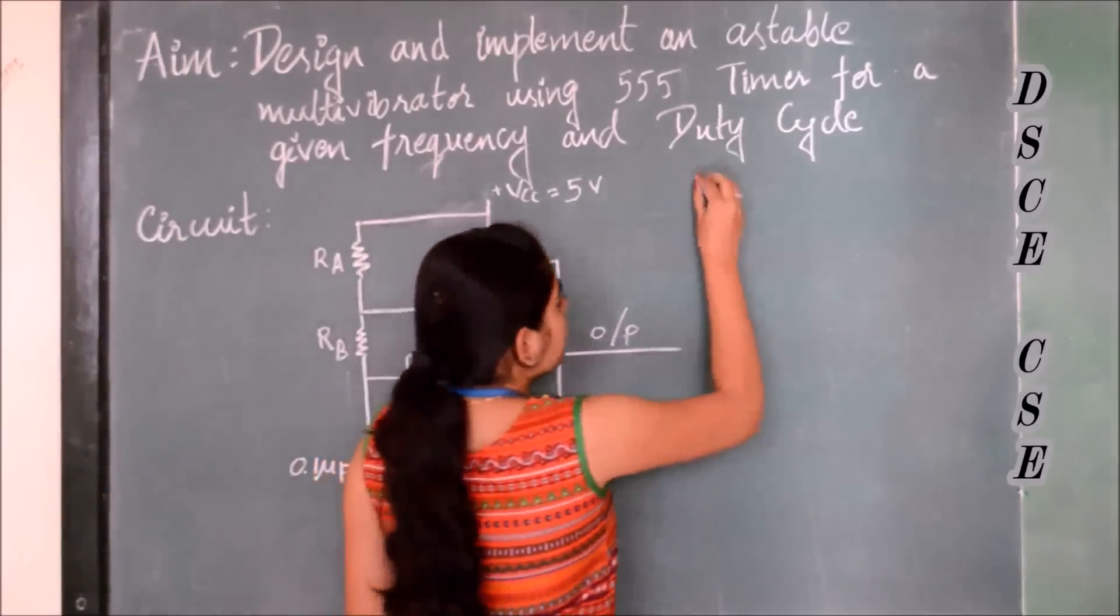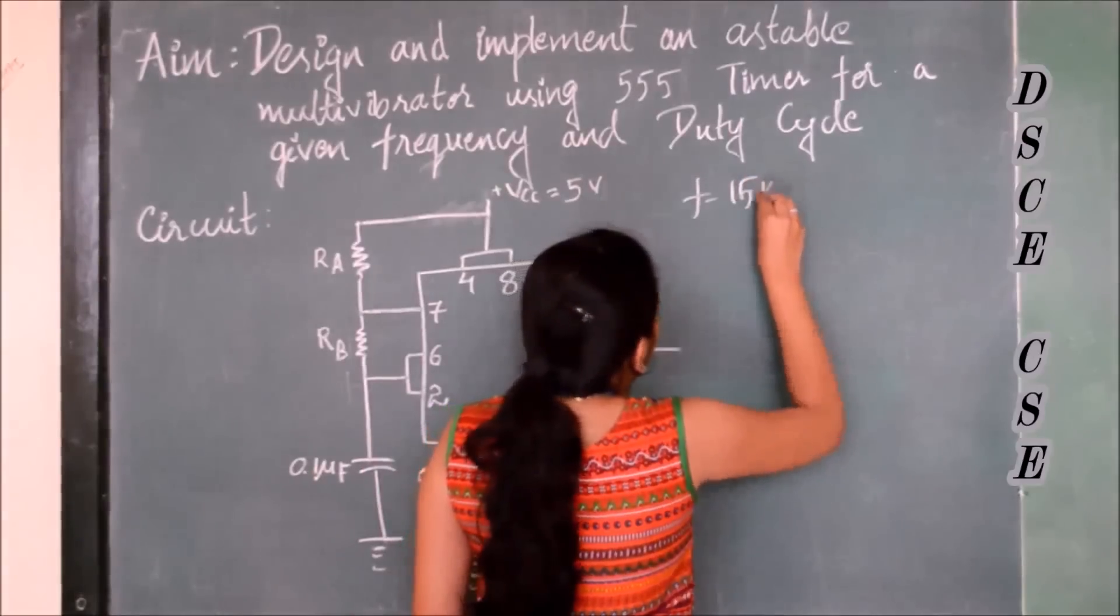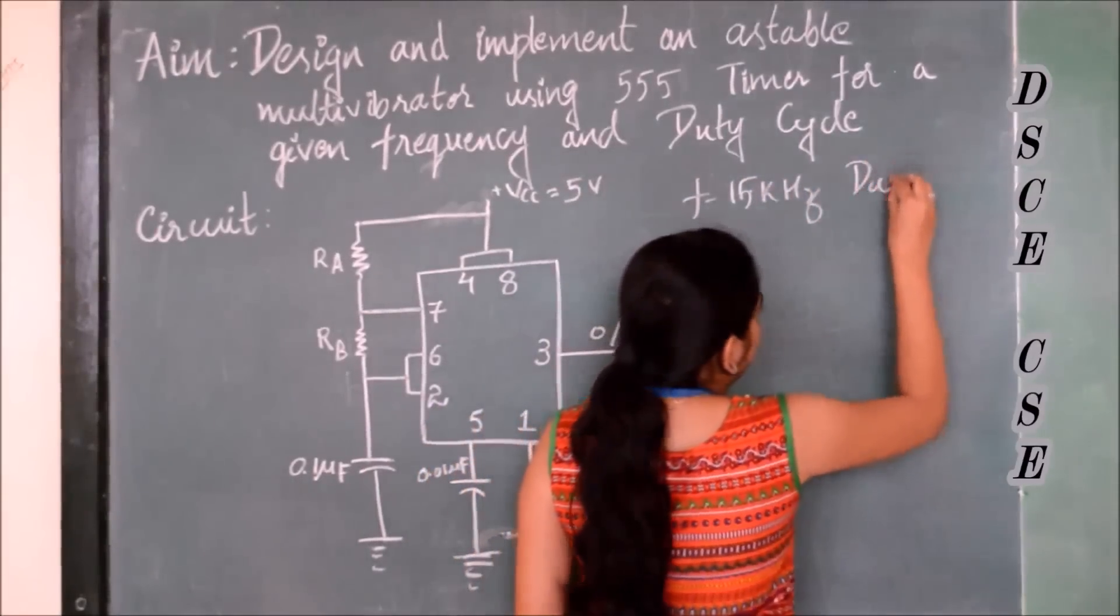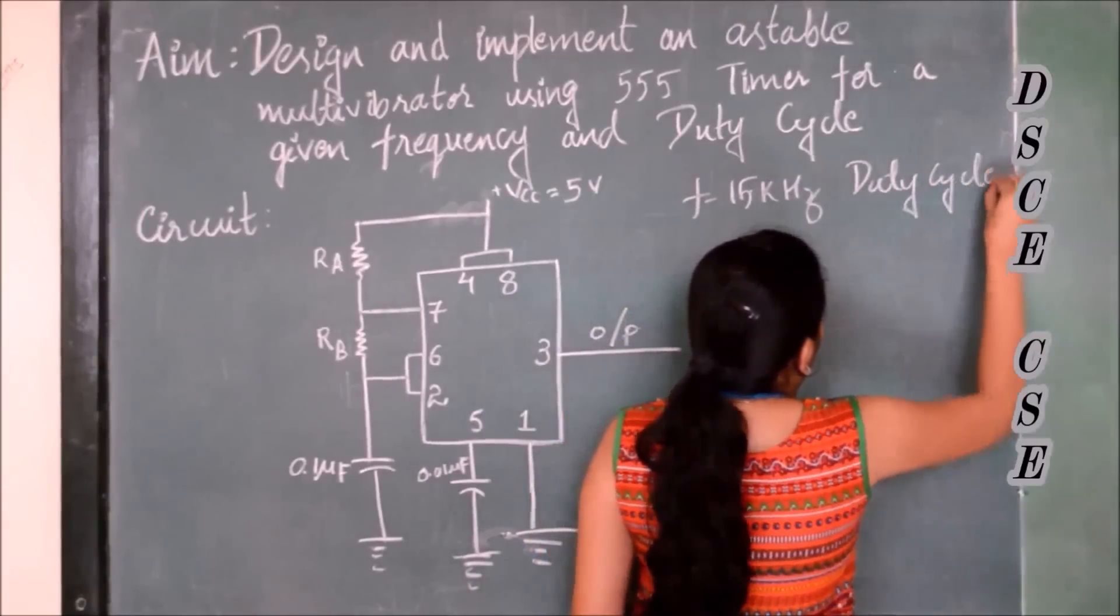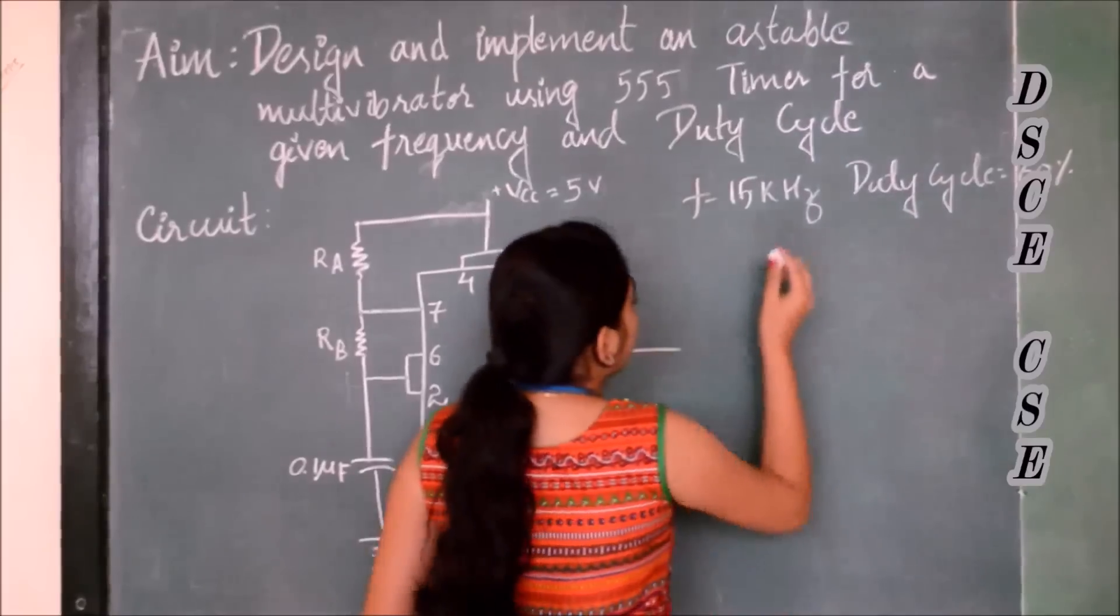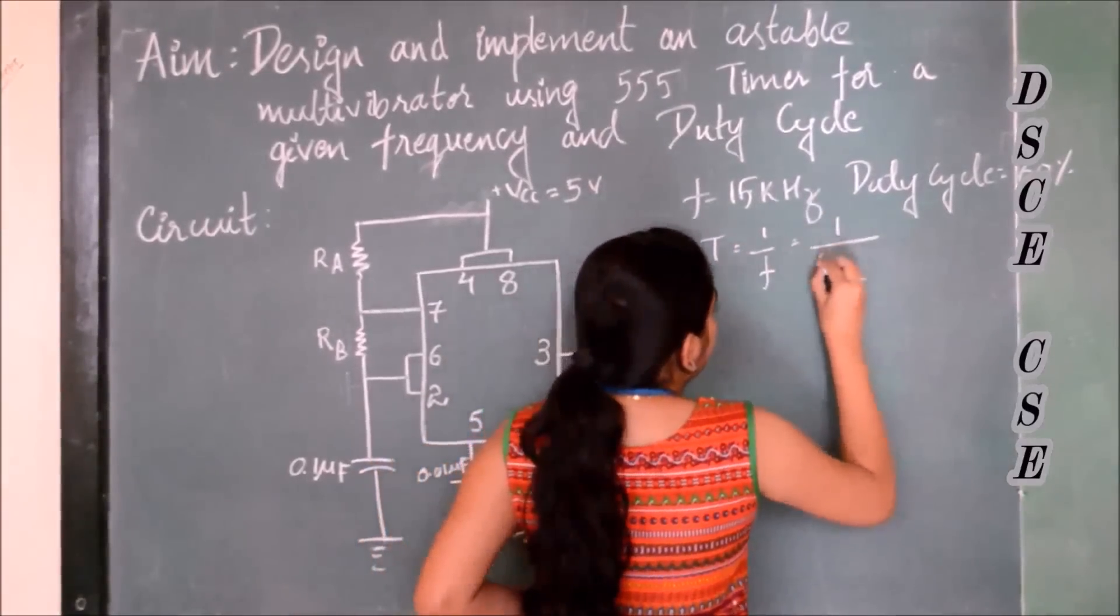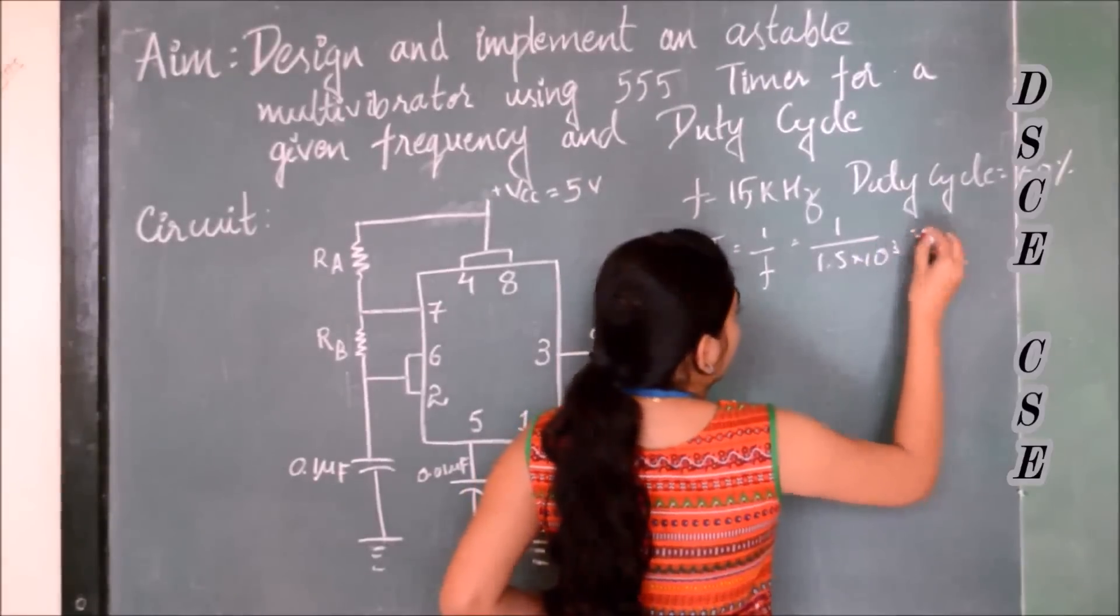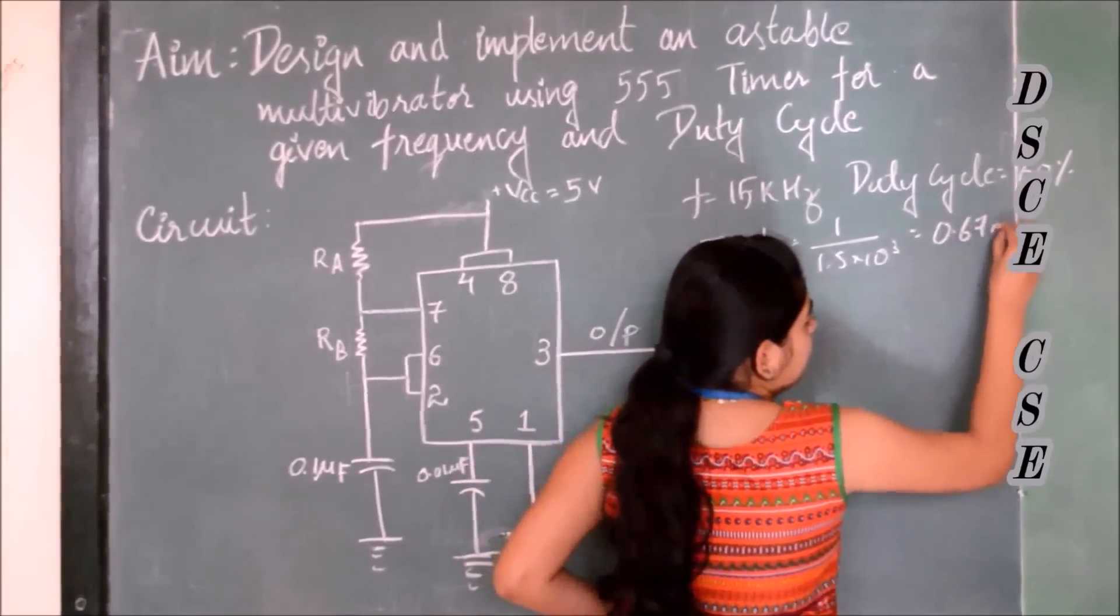Suppose the frequency is 1.5 kilohertz and the duty cycle is 50 percent. We know that T is equal to 1 by F, so 1 by 1.5 into 10 to the power 3. We get this as 0.67 millisecond approximately.